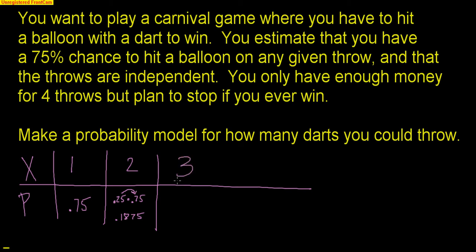Another option would be throwing three darts. What would have to happen to throw three darts? I miss, I miss again, but then I do finally hit on that third dart. So miss, miss, then hit on that third dart. That would be 0.25 times 0.25 times 0.75, which equals 0.046875.